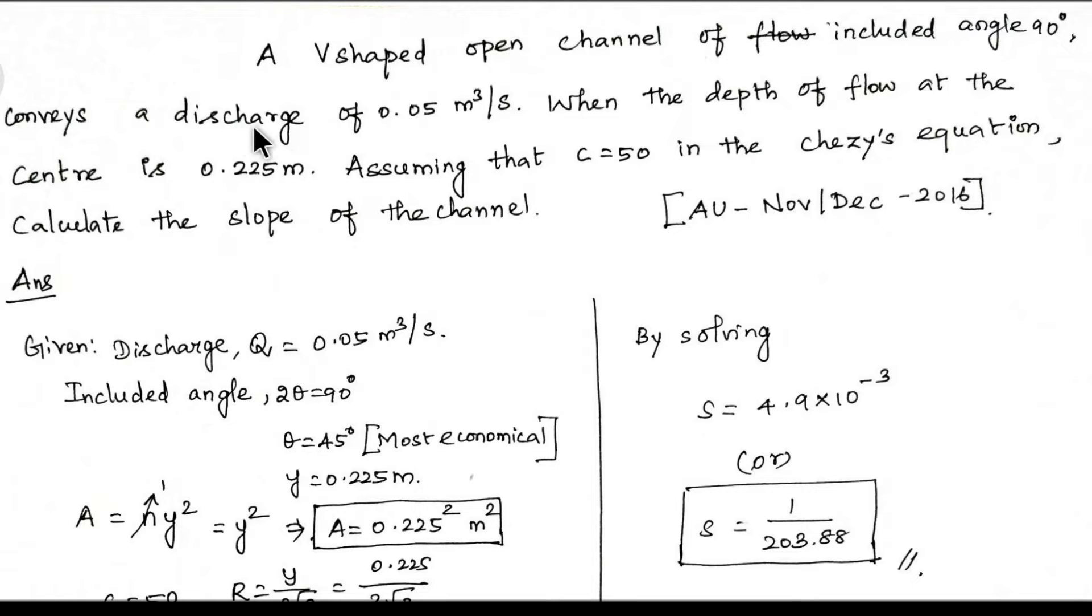Conveys a discharge of 0.05 m³ per second. The discharge value is 0.05 m³ per second. The depth of flow at the center is 0.225 m. Assuming that c equal to 50.